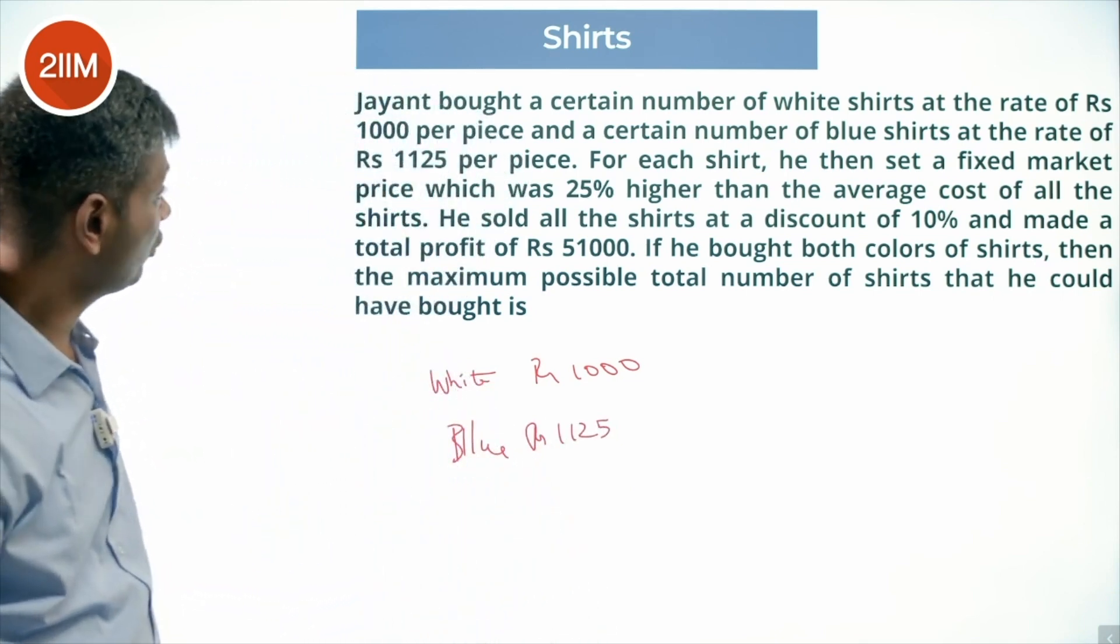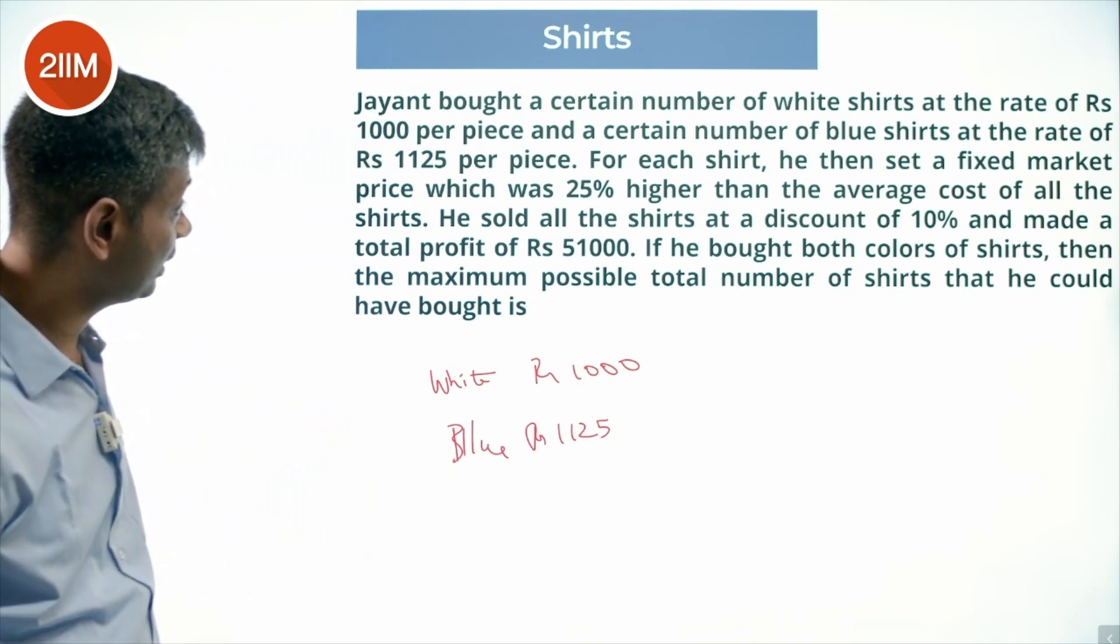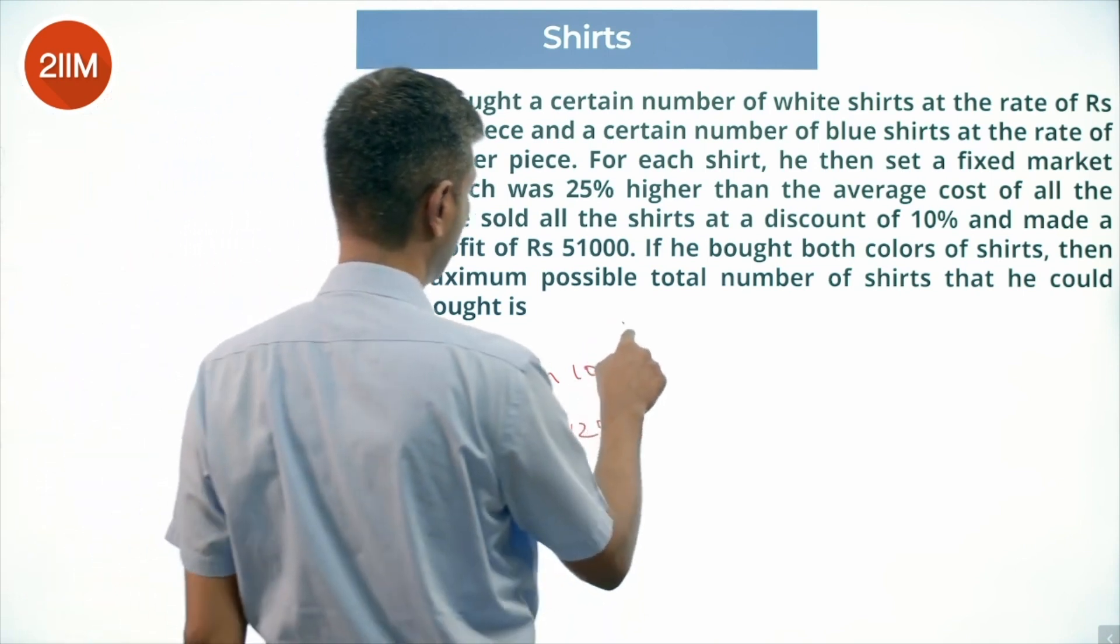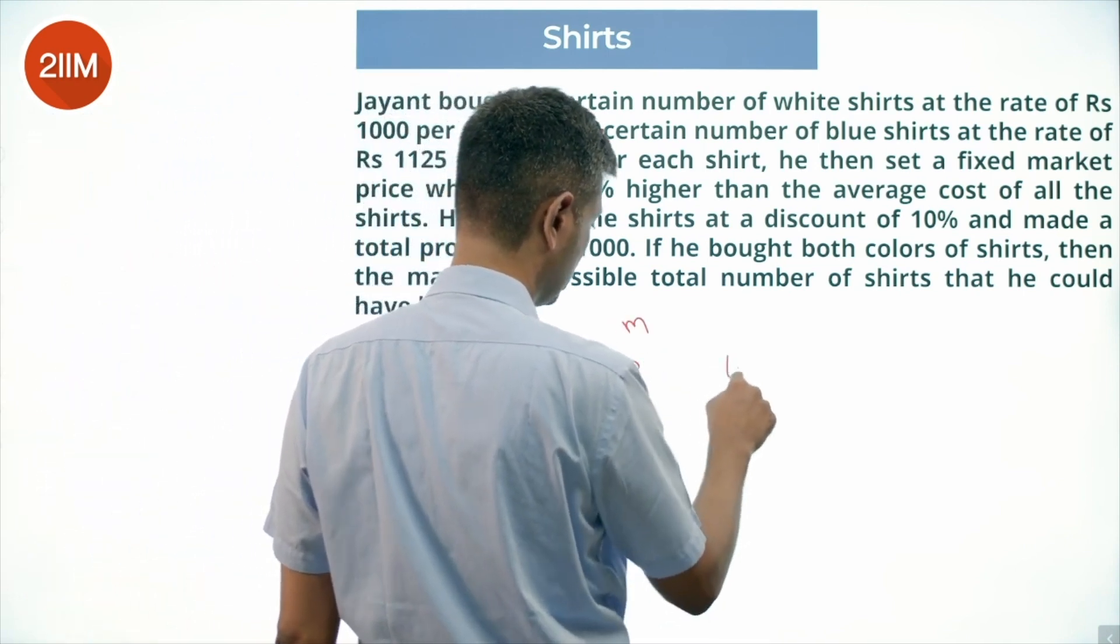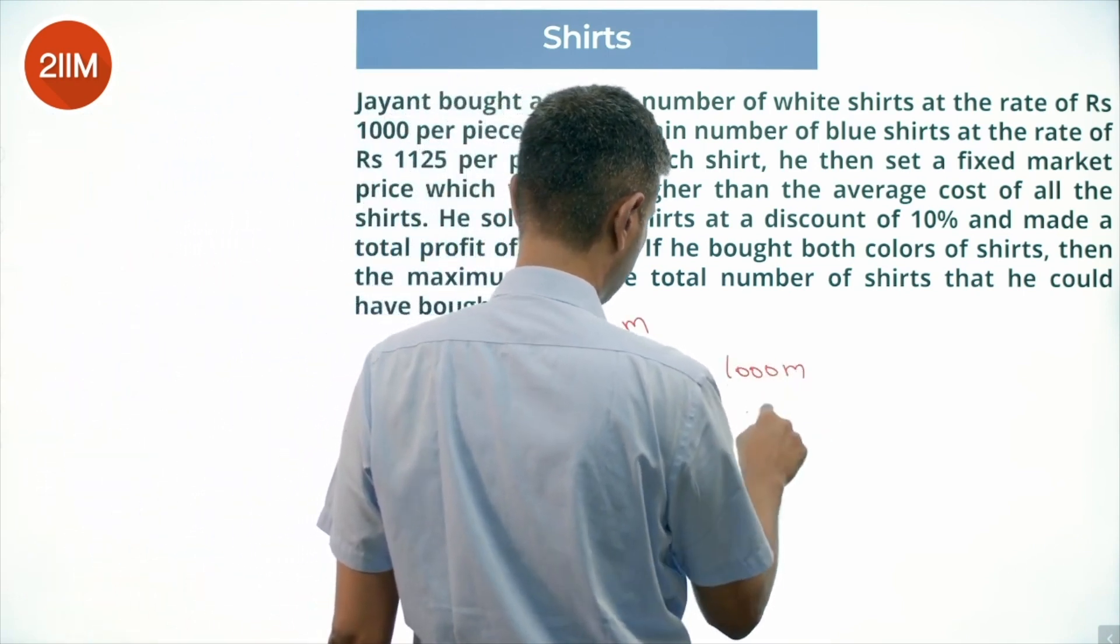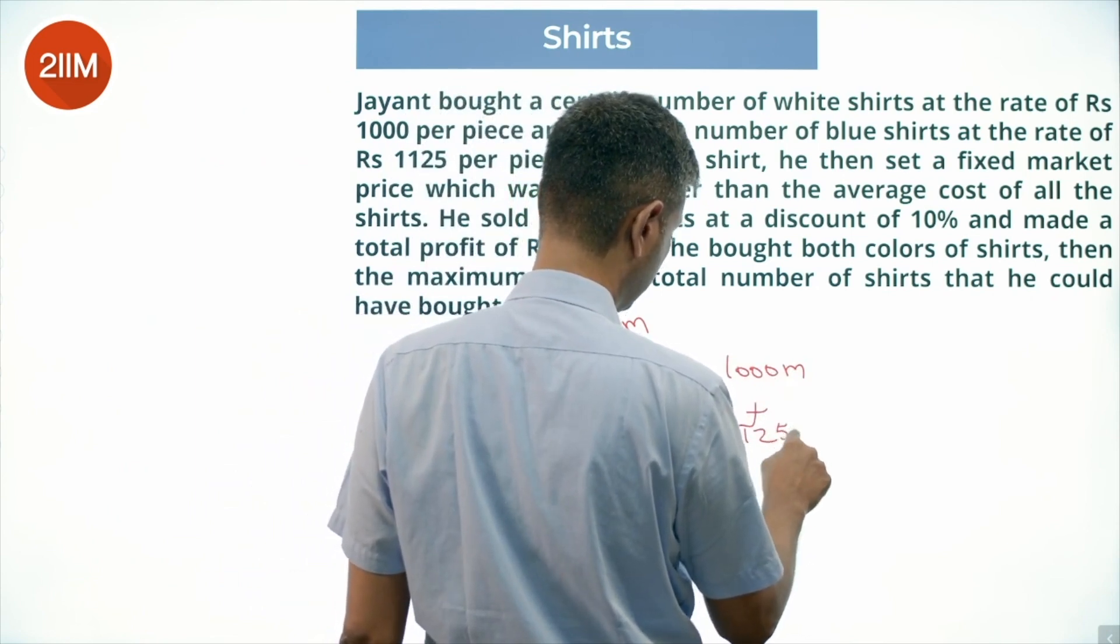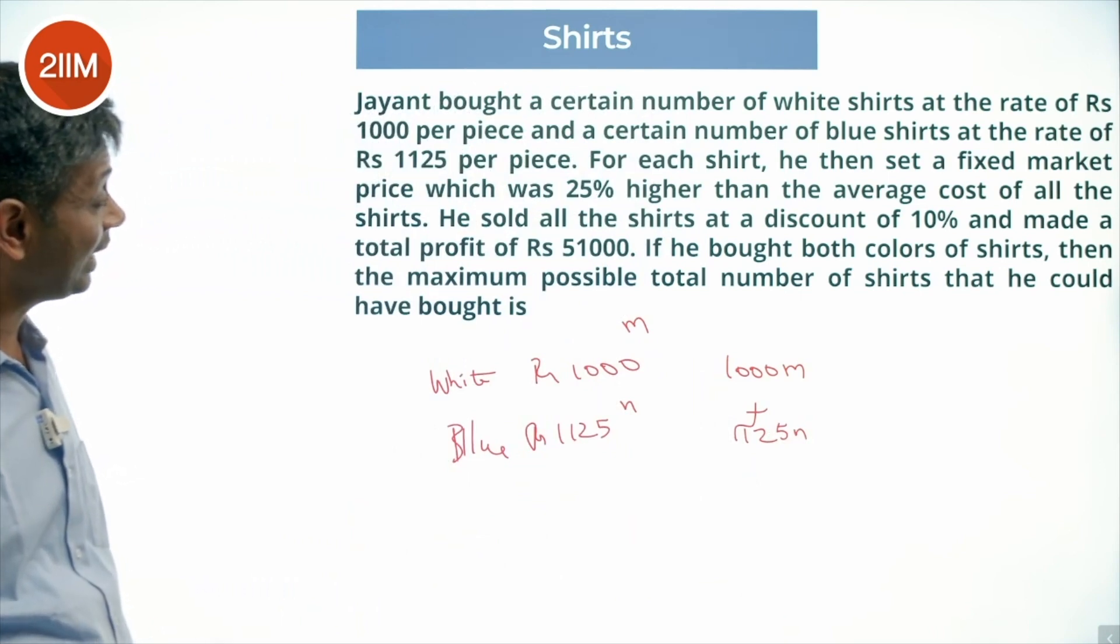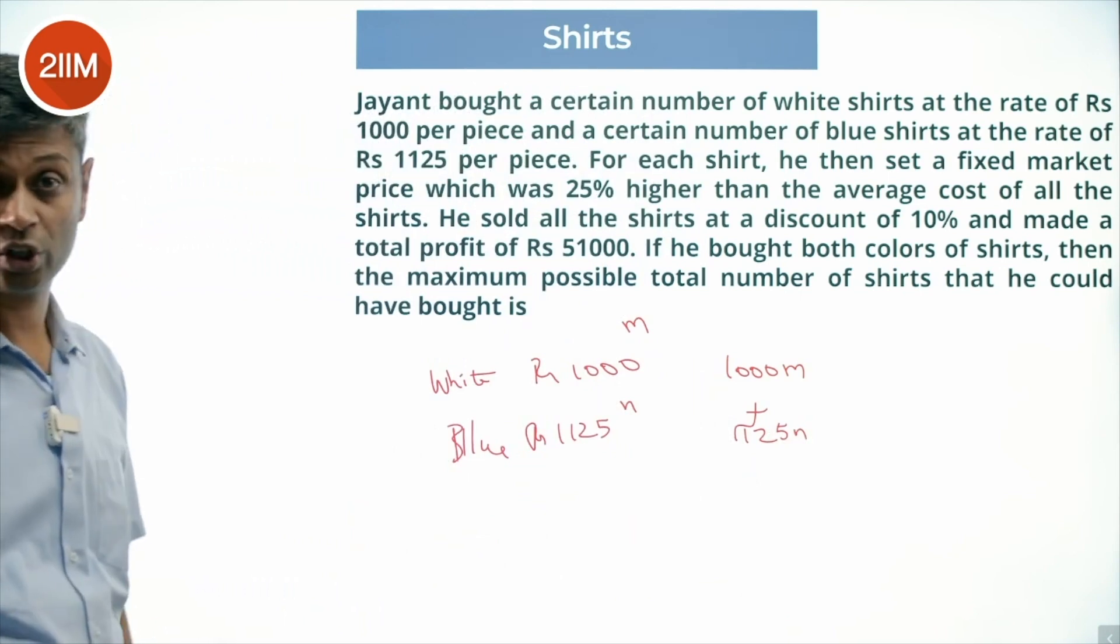For each shirt, he set a fixed market price which was 25% higher than the average cost of all shirts. If there are m white shirts and n blue shirts, the average cost is (1000m + 1125n) divided by (m + n). He set the price 25% higher than this average cost.